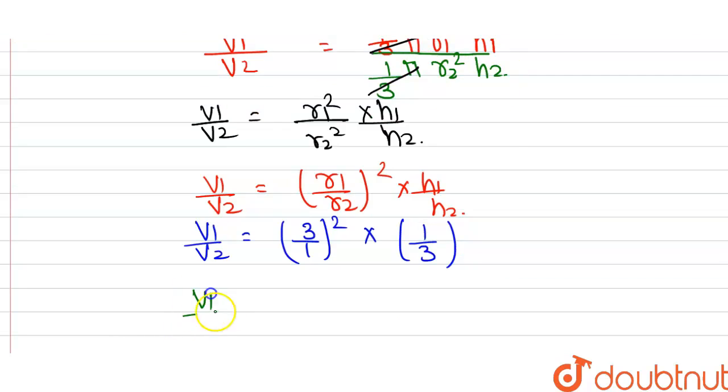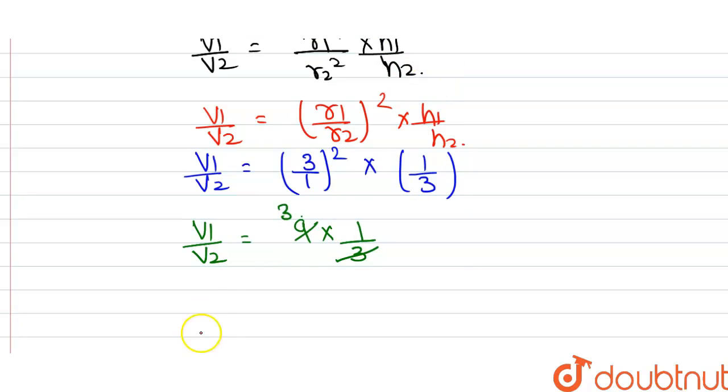Now v1 by v2, that is the ratio of volume, equals 3 square is 9 multiplied by 1 by 3. This 3 divides the 9 three times, so we get the ratio of volume equals 3 by 1. So in this way we calculate the ratios of their volume.